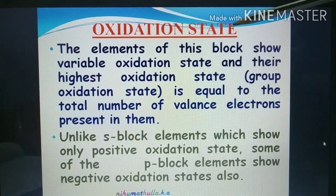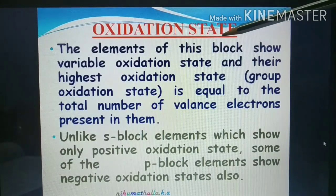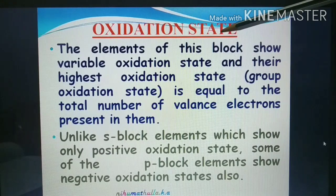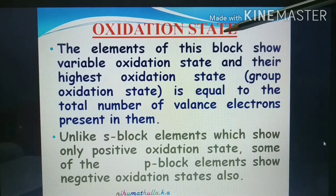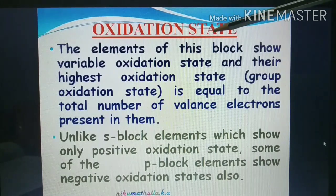The second group element under S-Block is alkaline earthy metal — beryllium, magnesium, calcium, strontium, barium, radium. They lose two electrons, always having a plus two oxidation state.